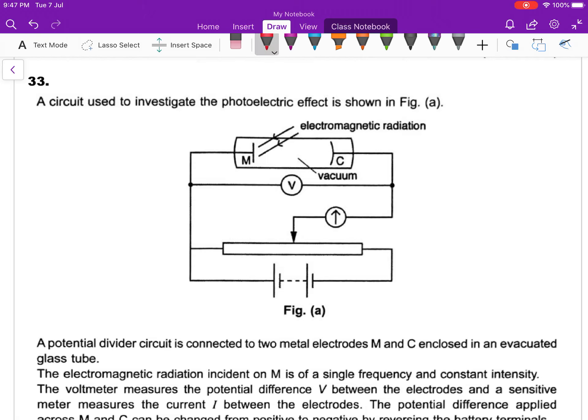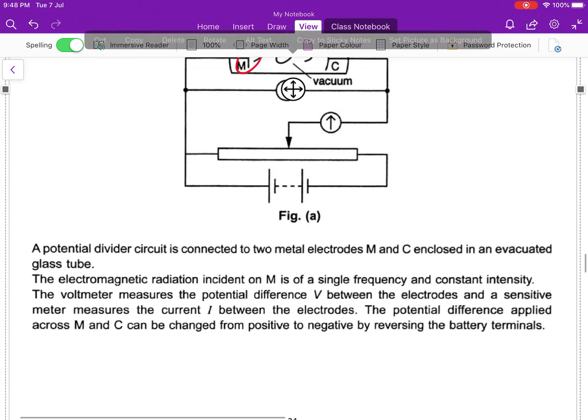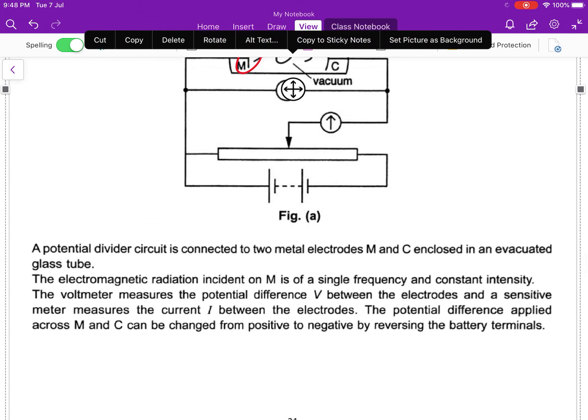Okay, question 33 from 2015 on quantum physics. A circuit used to investigate the photoelectric effect is shown in figure A. So this is the moment of photoelectric effect. Electromagnetic radiation shines on the metal. After that, if the radiation has enough energy, the electron will be released. A potential divider is connected to two metal electrodes M and C enclosed in an evacuated glass tube.